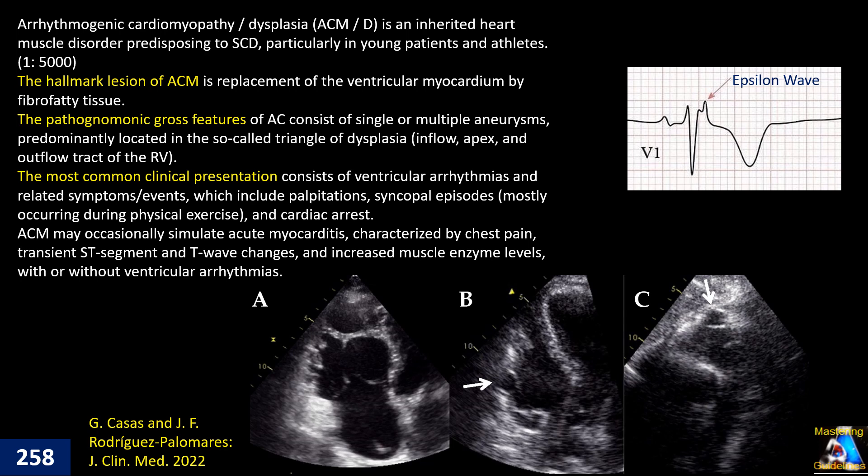The hallmark lesion of ACM is replacement of the ventricular myocardium by fibro-fatty tissue. During the last decade, our knowledge about this disorder has improved greatly. Previously data showed only right-side involvement, but current research shows that most of the time it involves both ventricles — it is biventricular. However, some cases involve only the right side, called right ventricular arrhythmogenic cardiomyopathy, and some involve only the left side, called left arrhythmogenic cardiomyopathy.